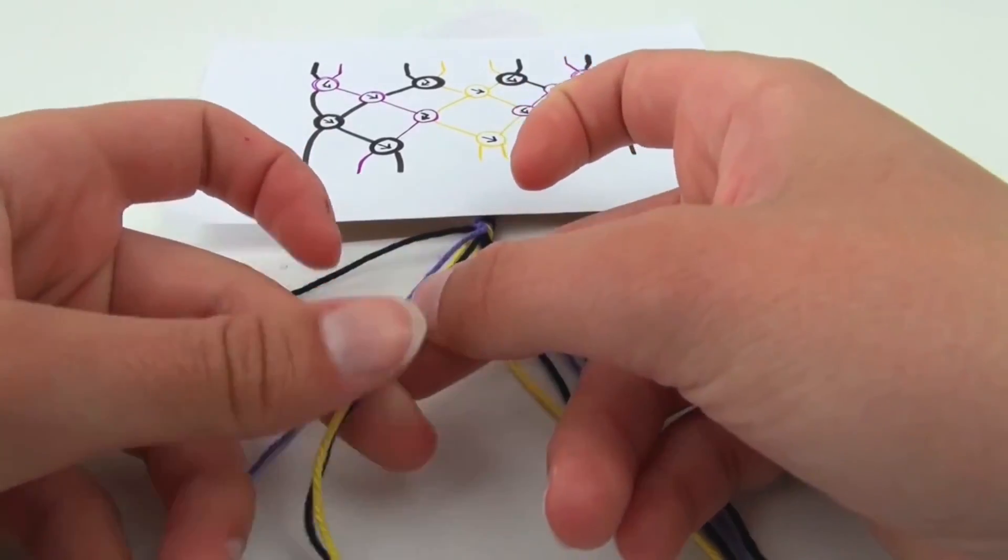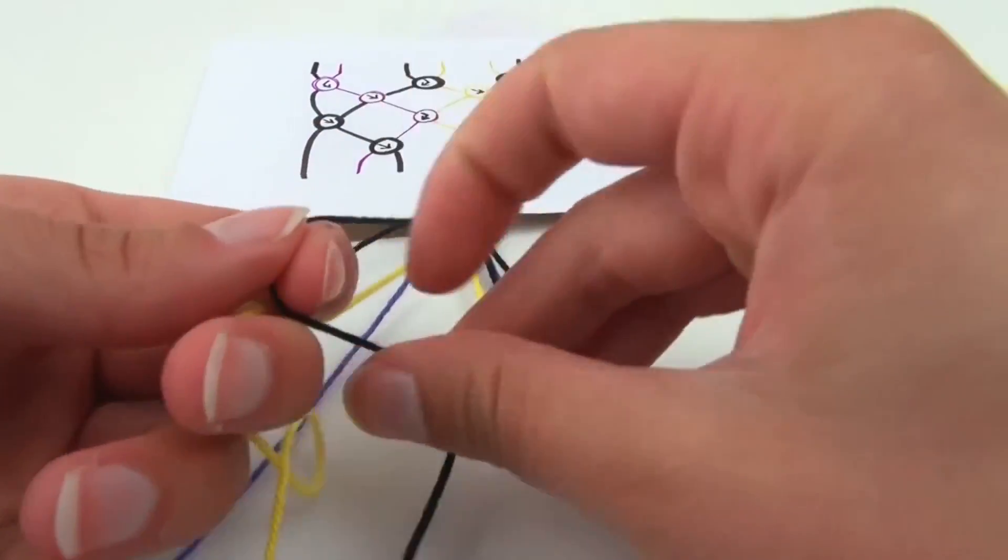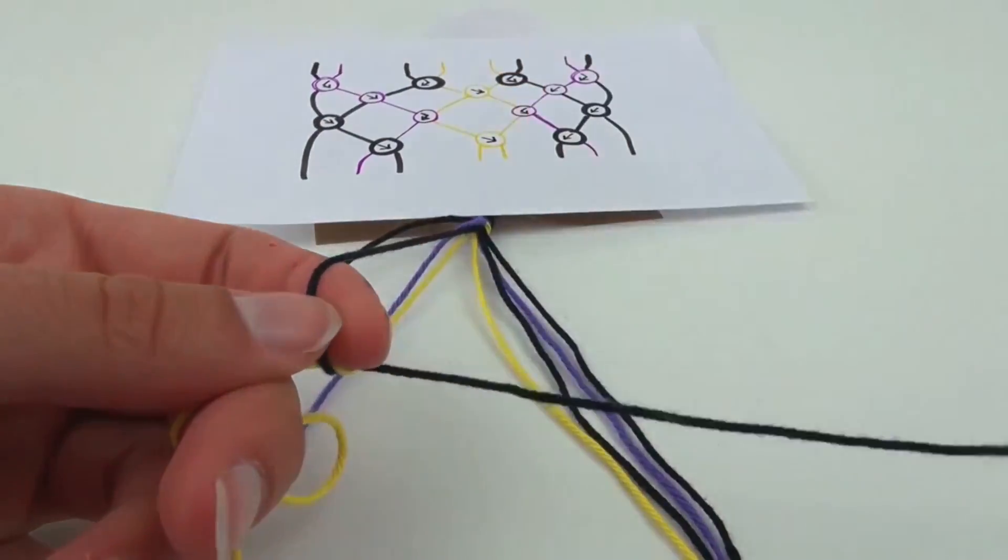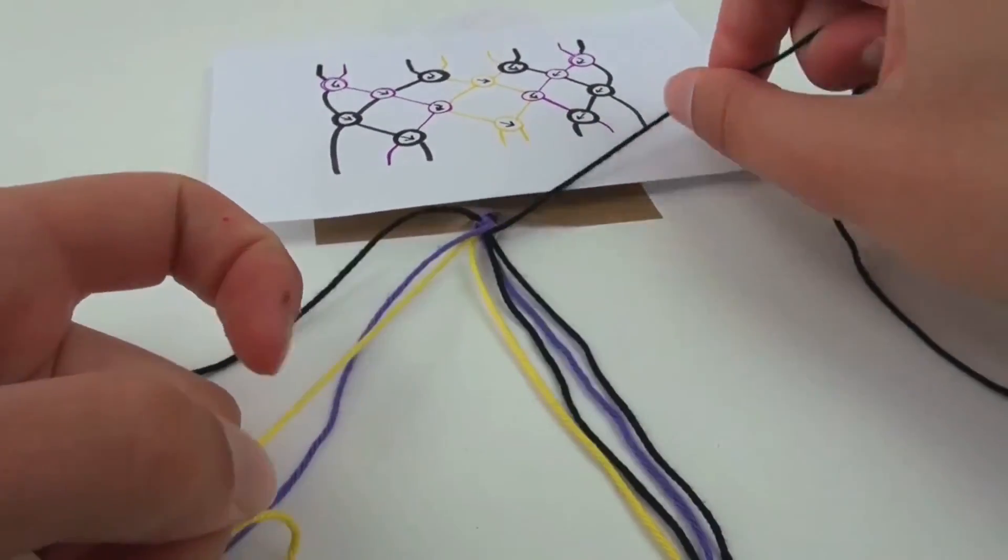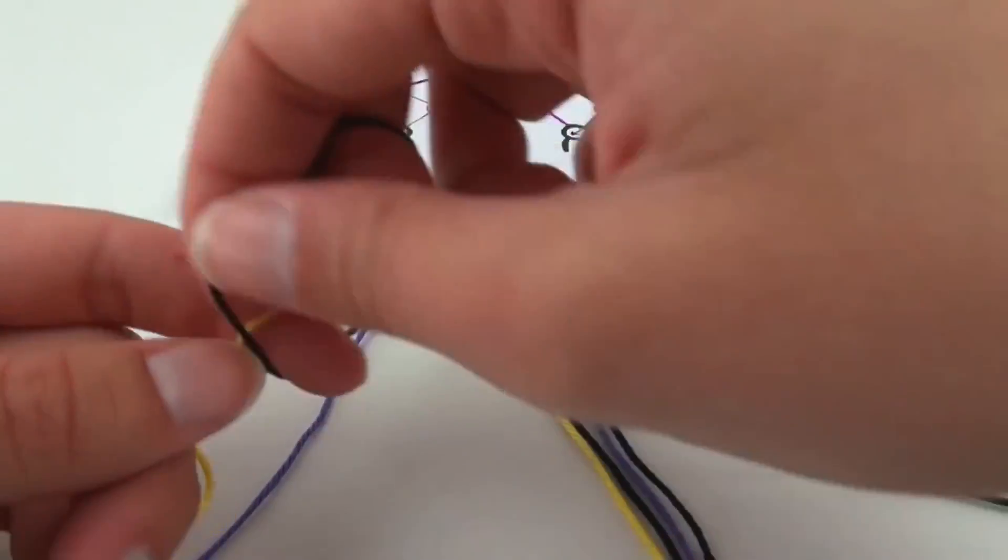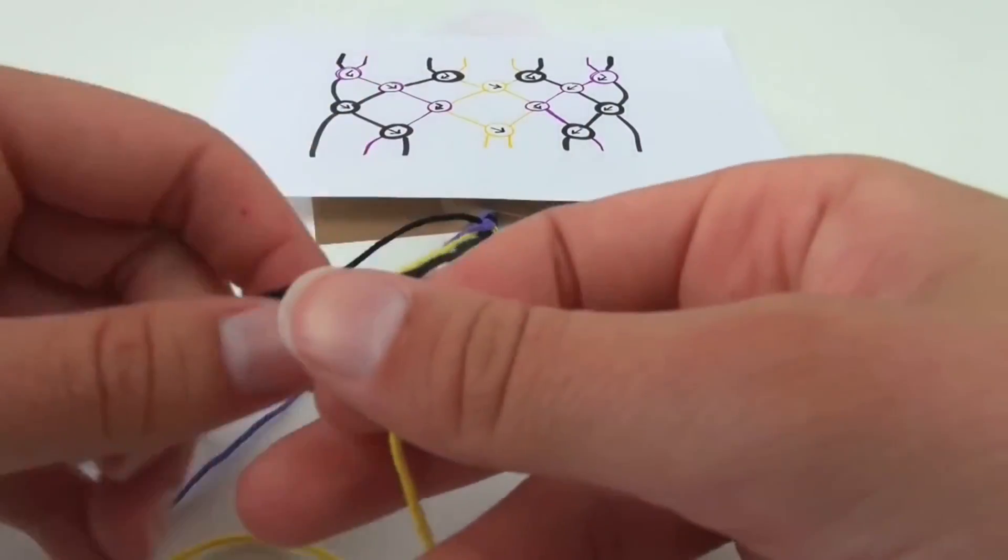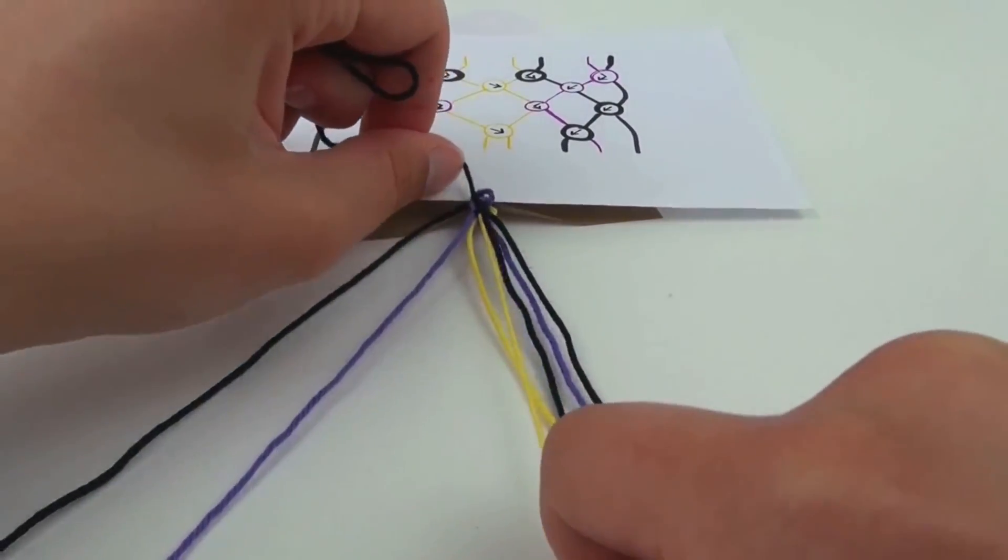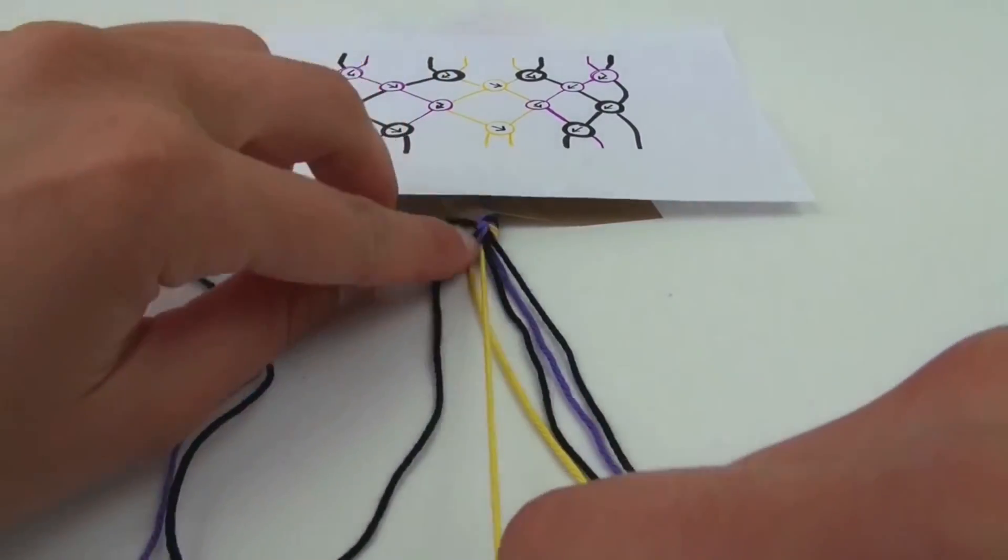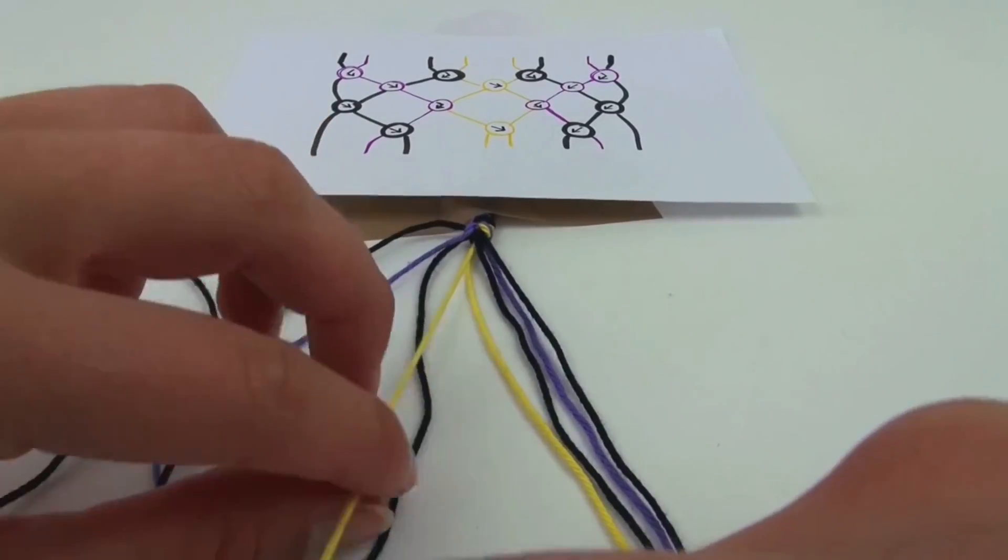Then the middle, we'll go from the black one on the left, so over the yellow one first, and then the yellow one goes over there. The black one first goes over the yellow one towards the left, and then over the yellow one towards the right.